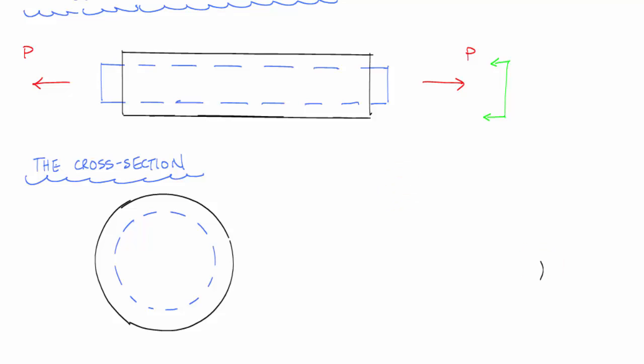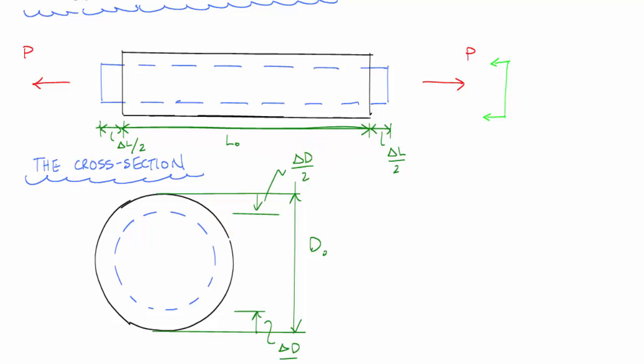So if I knew the initial length and then the final length or the deformation of this thing, and if I knew the initial height of the cross-section, say the initial diameter, I knew the final diameter or just this change.